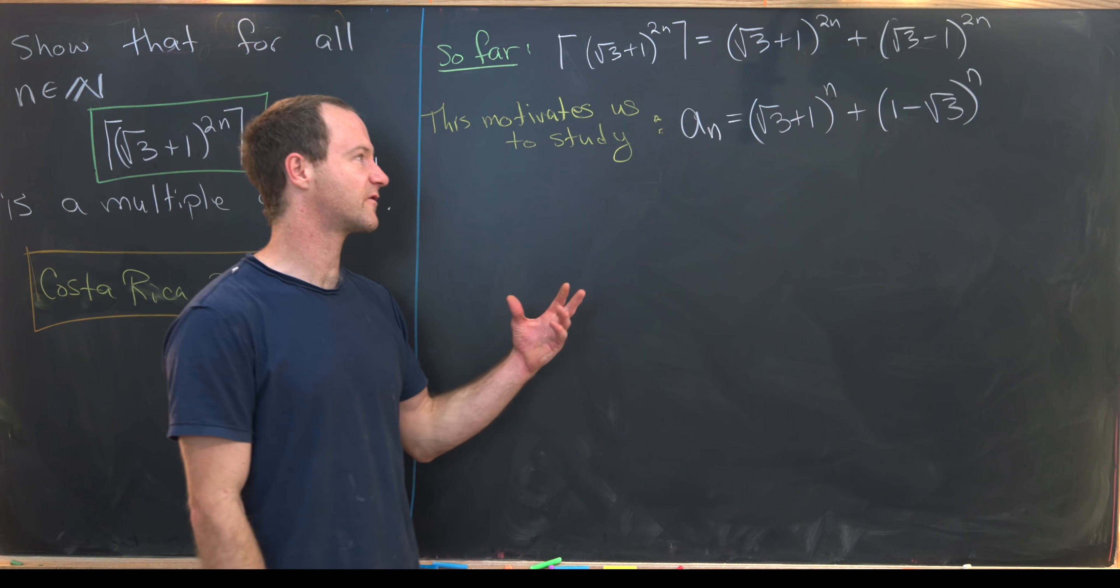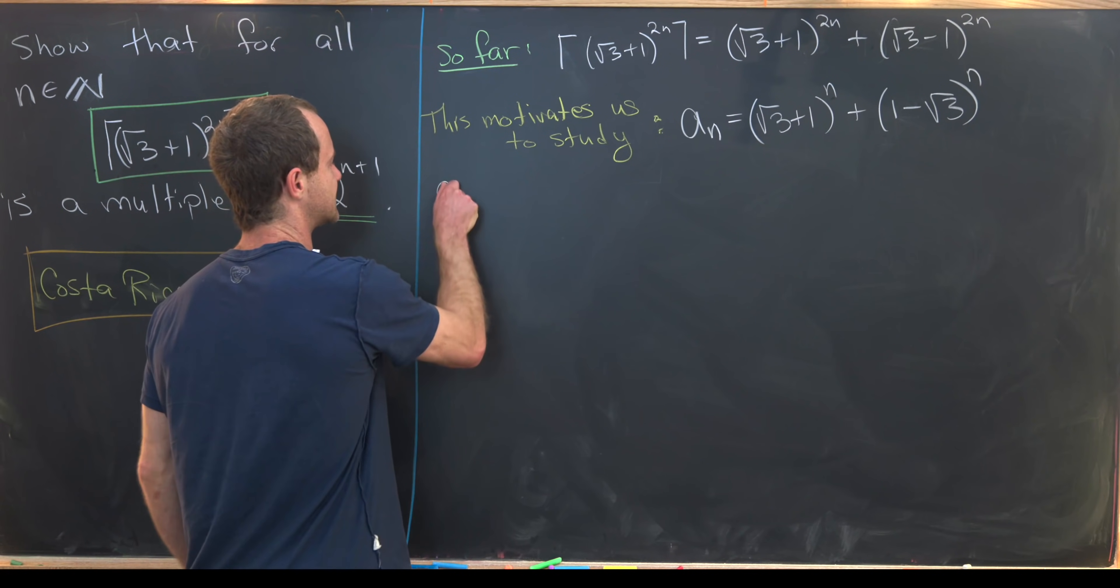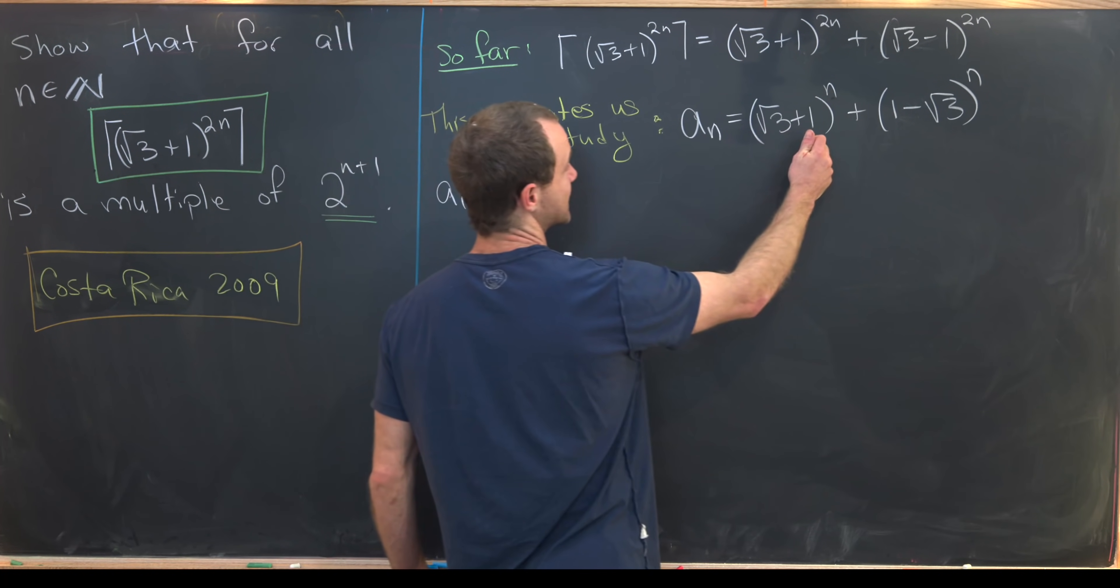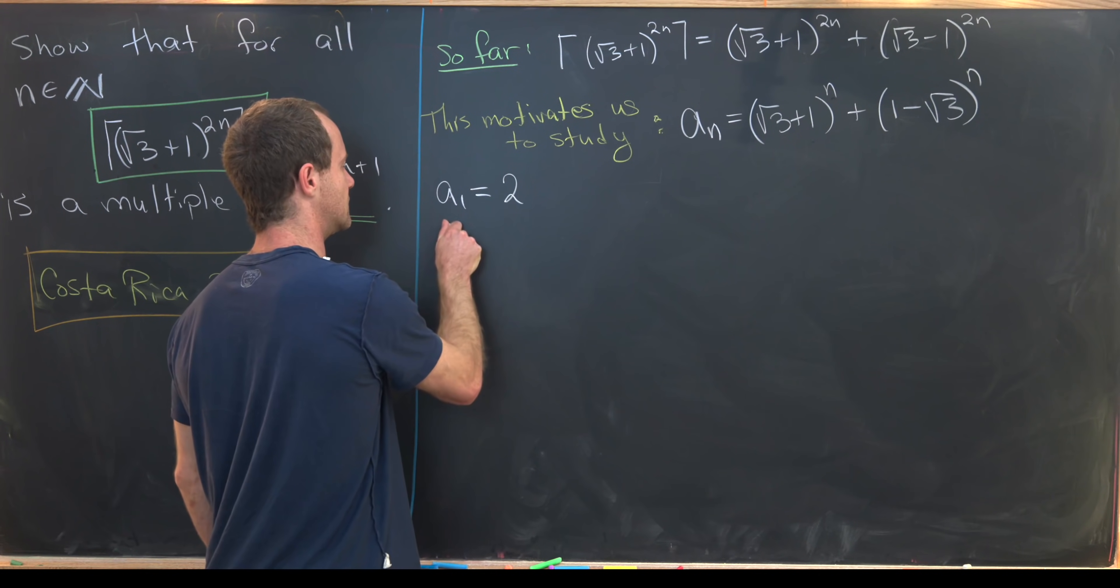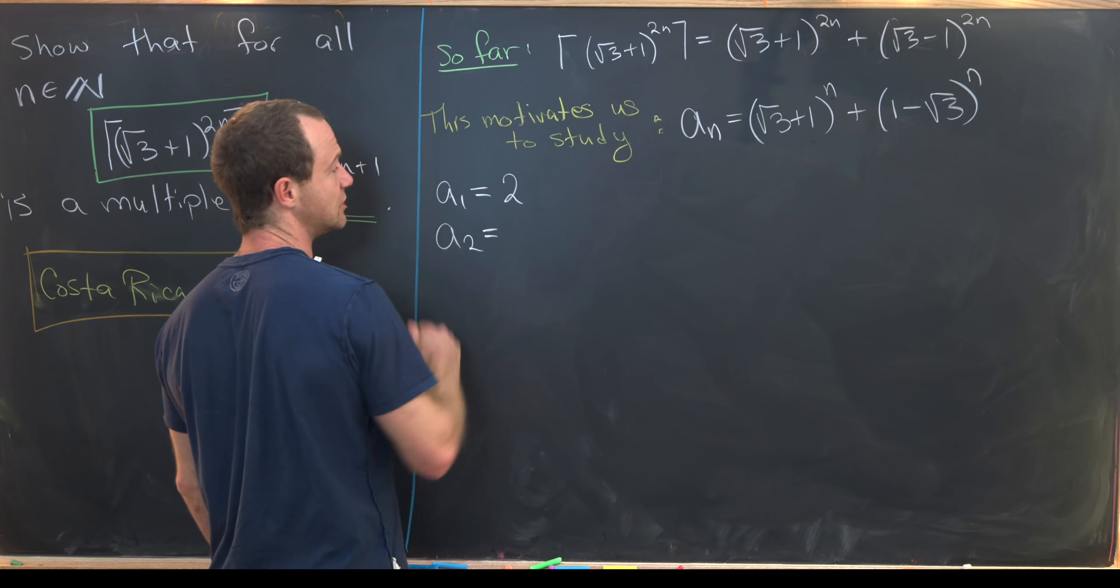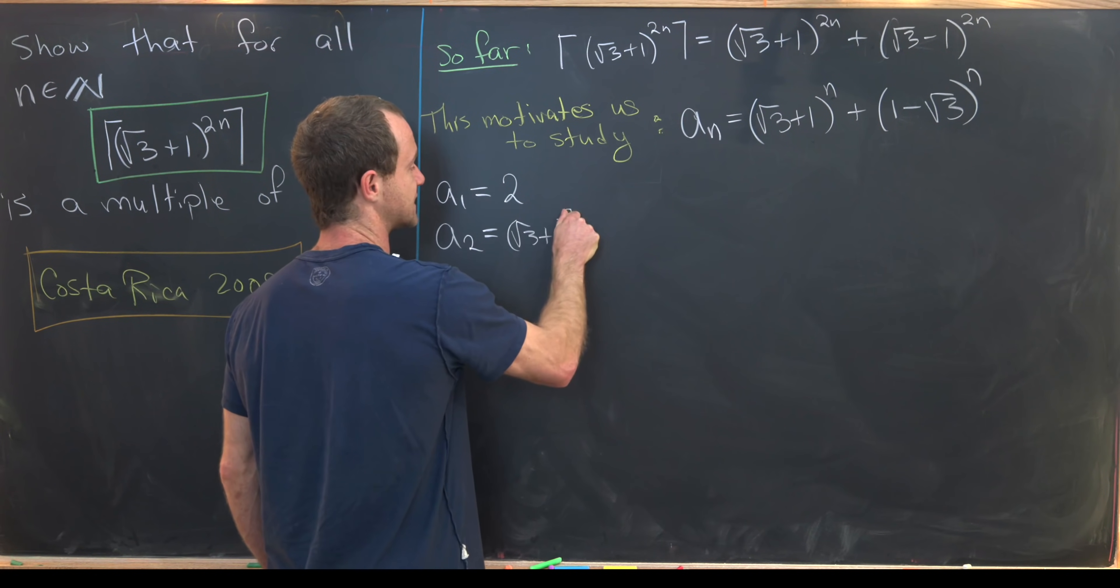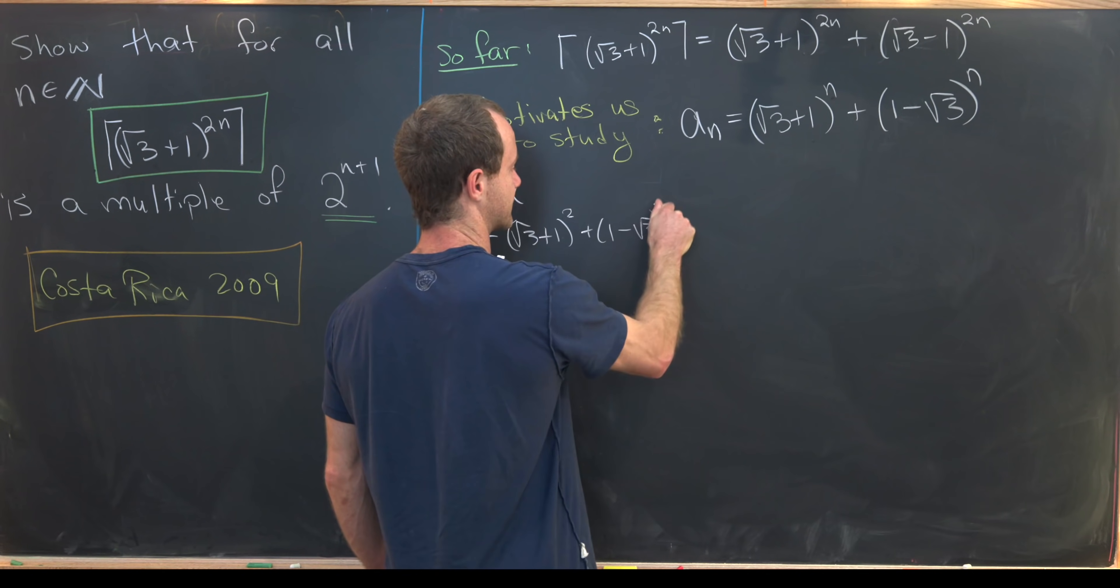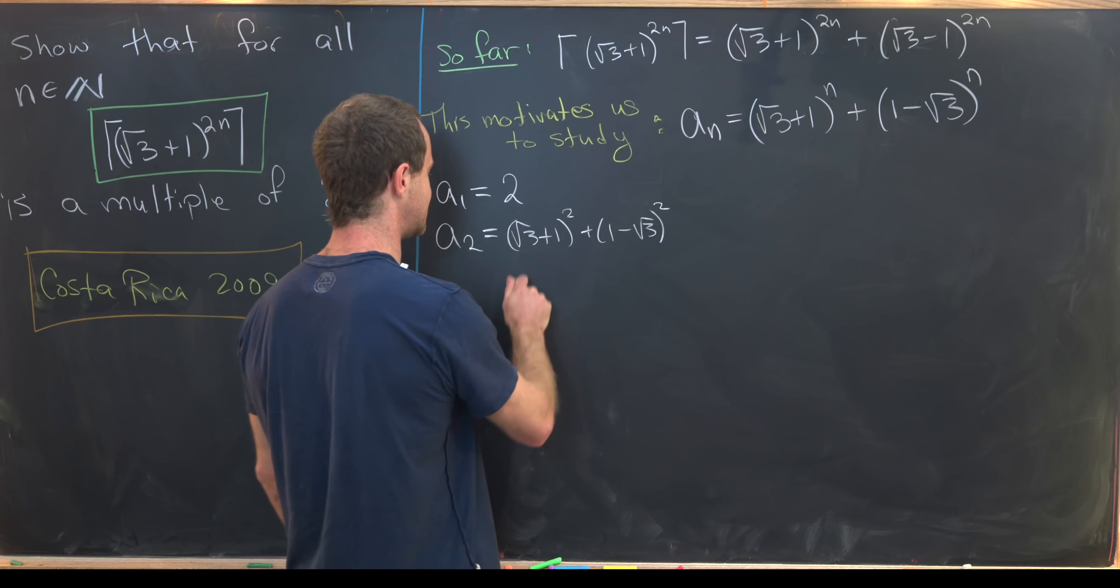So let's notice that a1, for instance, is root 3 plus 1 plus 1 minus root 3. Well, those root 3s cancel and we've just got 2. So a2 is equal to, well, we can calculate that pretty easily, the square root of 3 plus 1 squared plus 1 minus the square root of 3 squared. So I'll let you guys multiply that out if you want to, but what you'll see is that this is equal to 8.